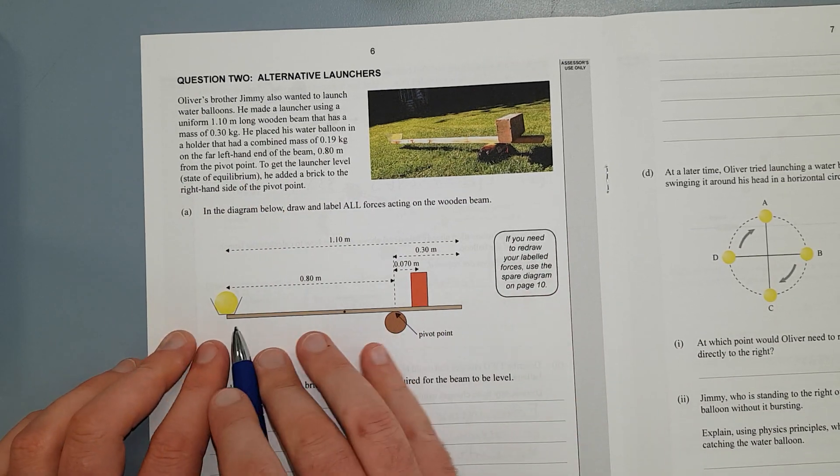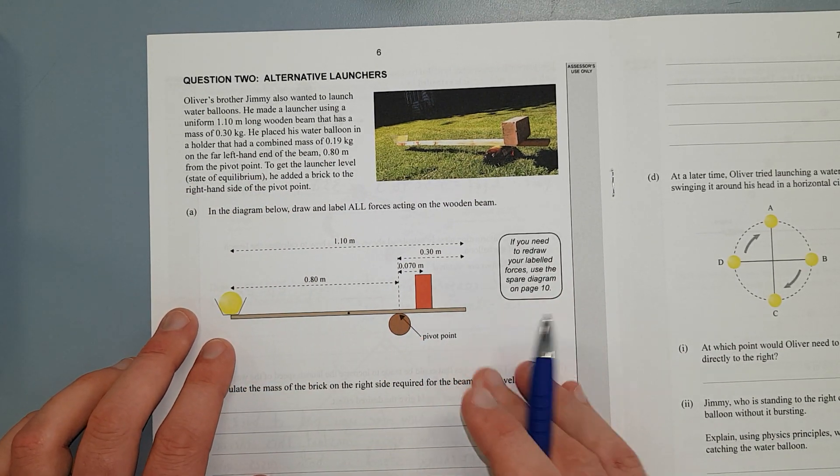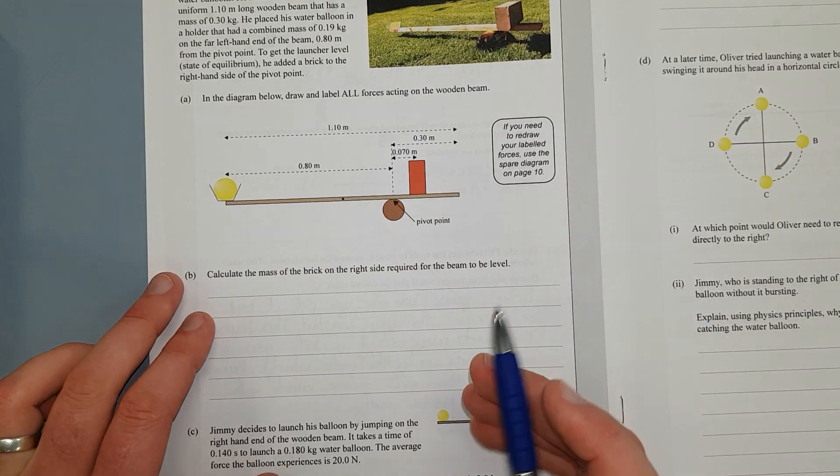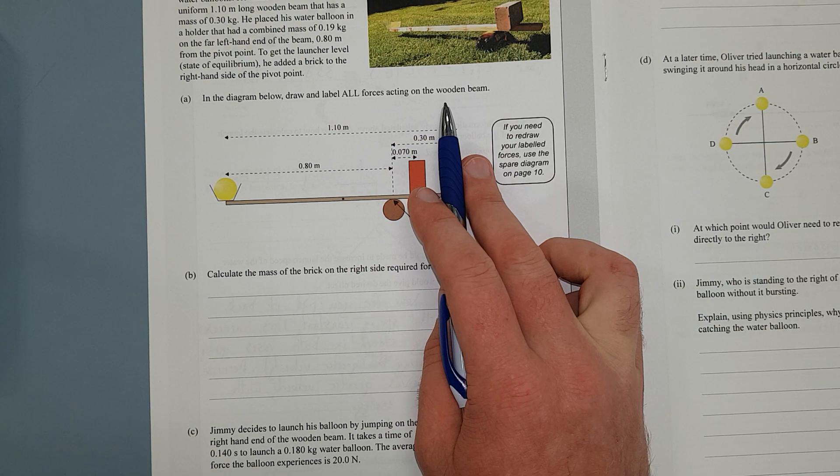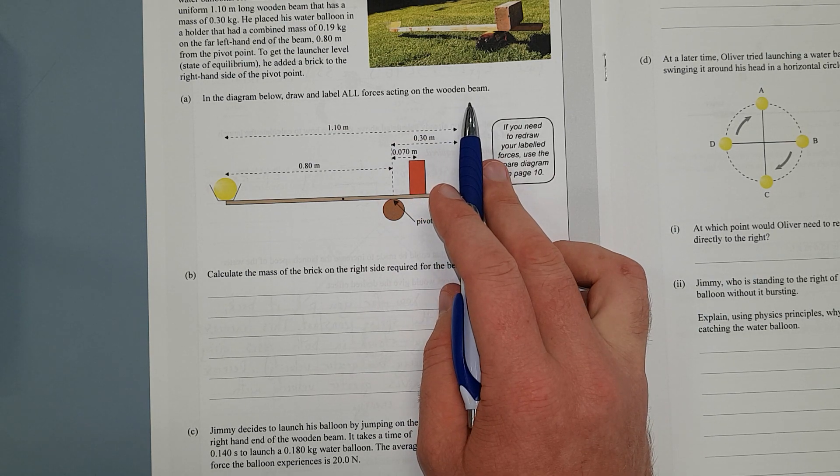So he's added a brick here so it's just balancing. Well done, that's pretty clever. Right, so in the diagram below, draw and label all forces acting on the wooden beam.